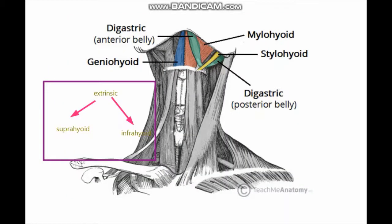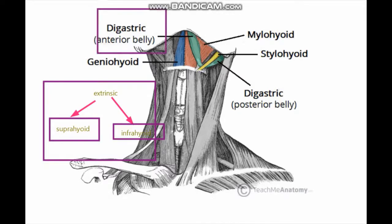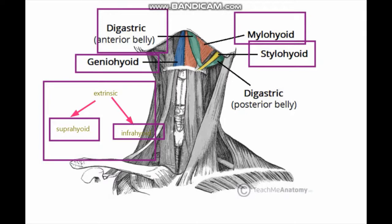The extrinsic muscles of the larynx are divided into suprahyoid and infrahyoid groups. The suprahyoid muscles elevate the larynx and include the digastric, mylohyoid, stylohyoid, and geniohyoid. This brownish one is the mylohyoid, this yellowish one is the stylohyoid, the larger greenish one is the anterior belly of the digastric, the smaller greenish one is the posterior belly, and this bluish one is the geniohyoid.